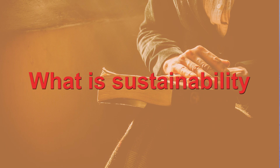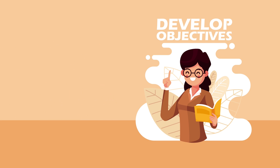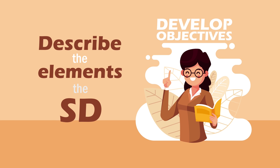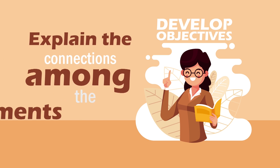What is sustainability? For developing the objectives, the objectives developed are: students will be able to describe the concept of sustainable, define sustainable development, describe the elements of sustainable development, classify the areas of sustainable development, explain the connections and interactions among the elements, and discuss the sustainable society. All these objectives are interlinked and connected from simple to higher order thinking to a larger goal.